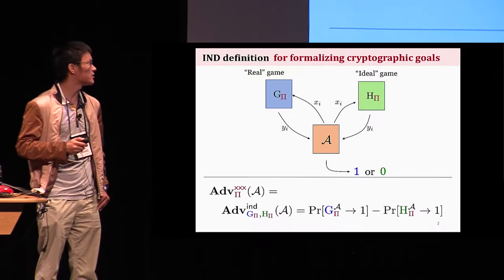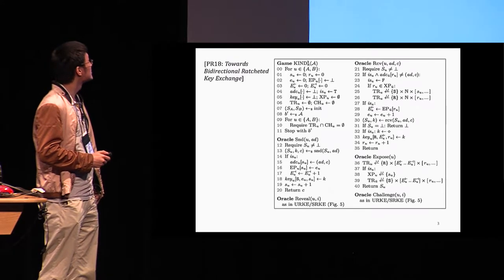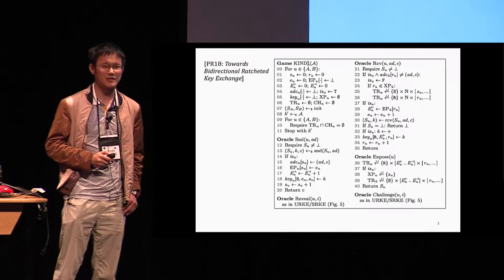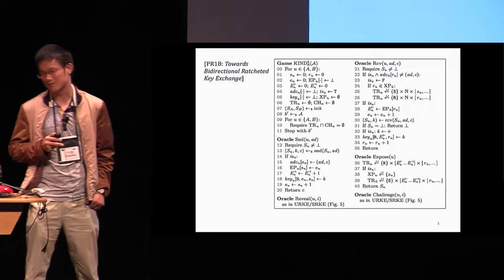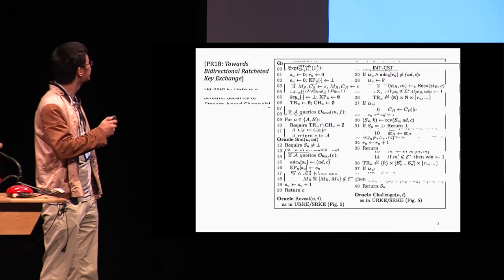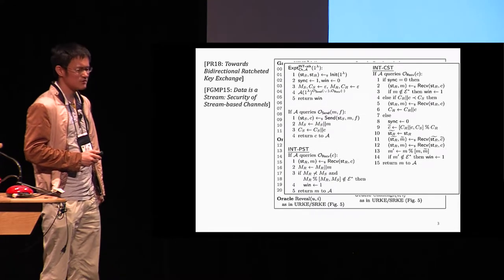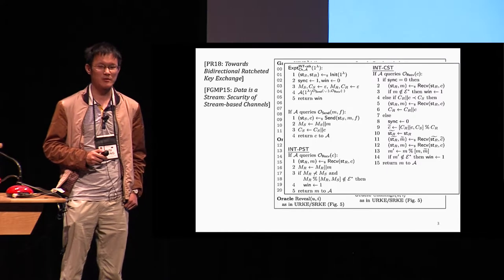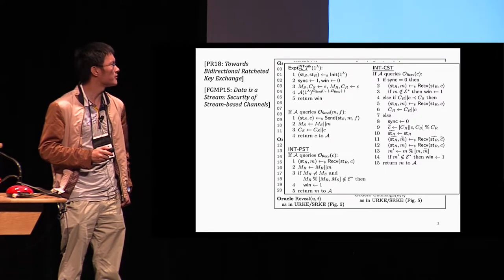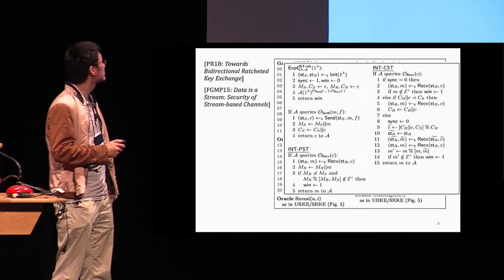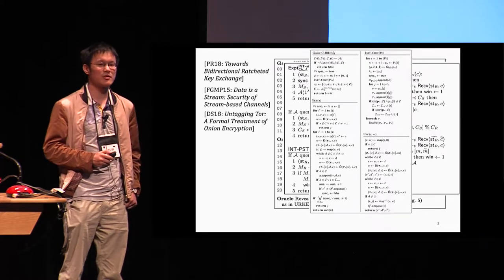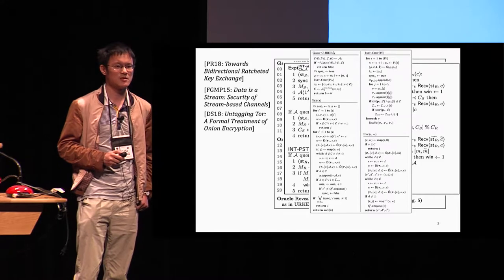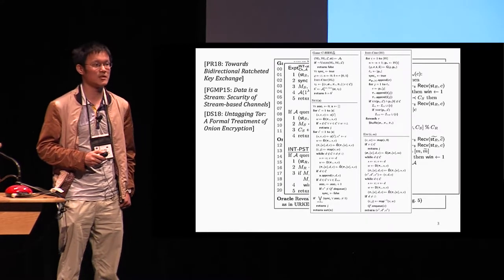So let's first go through some examples of what conventional games look like in the literature. Here is a game that defines key indistinguishability for bi-directional ratcheted key exchange. The relevant talk was given right here by Poetering two days ago. Here is another one that models integrity property of a primitive called data stream channels. It is a joint work done by Fischer-Lin et al. in crypto 15. Yet another one that models circuit hiding property of any encryption.